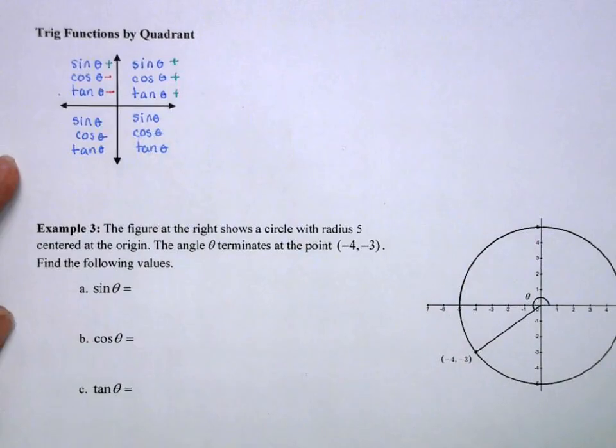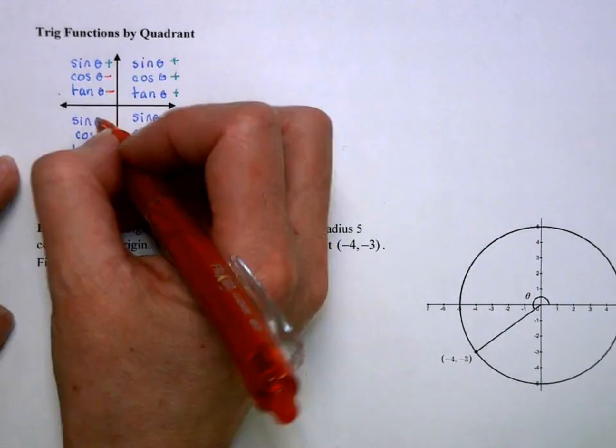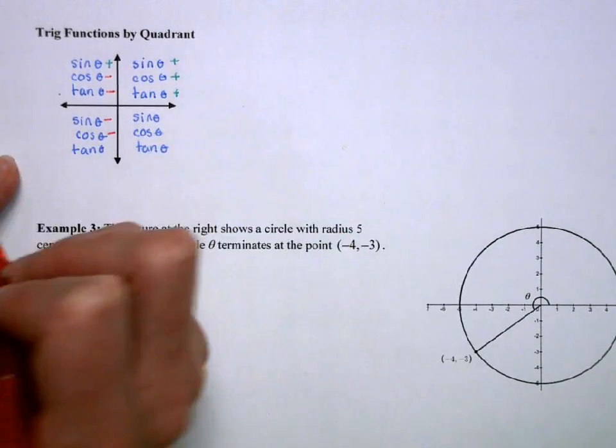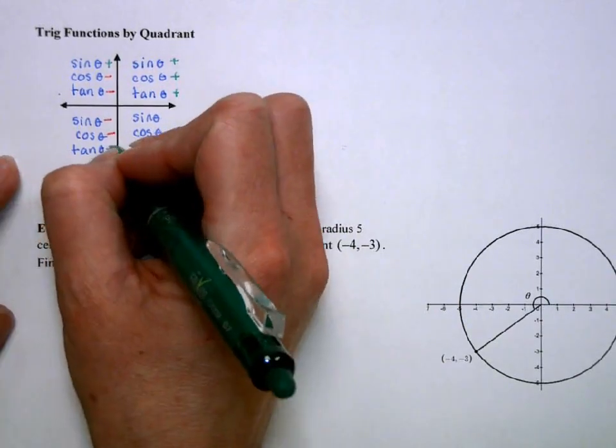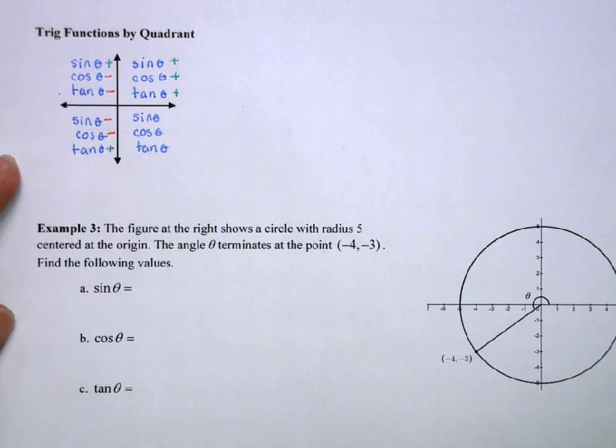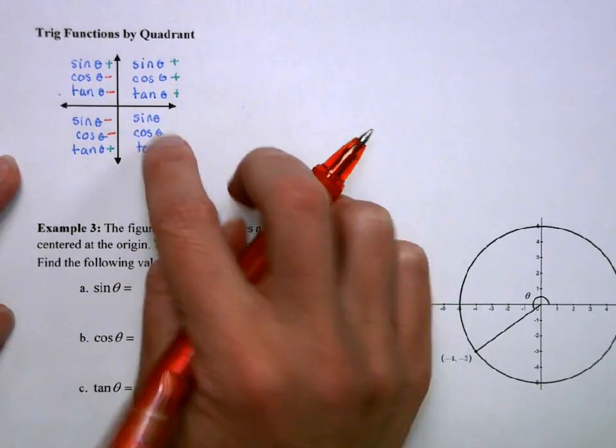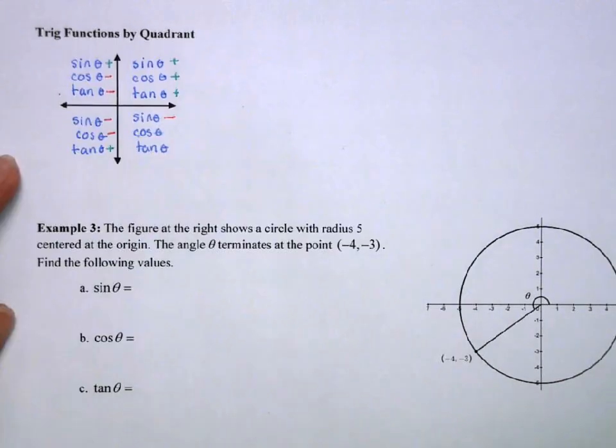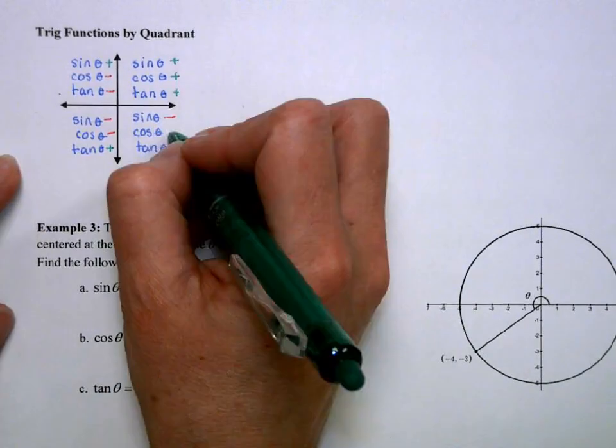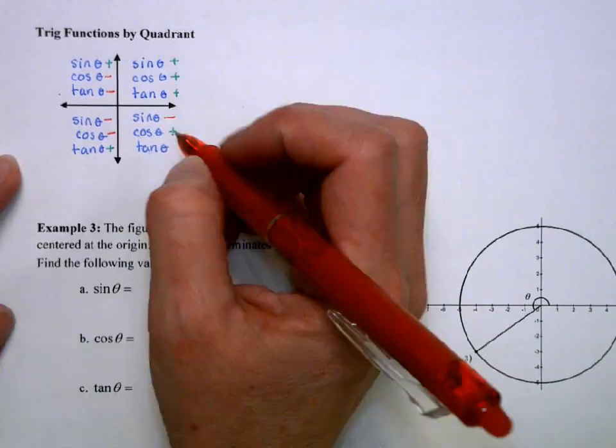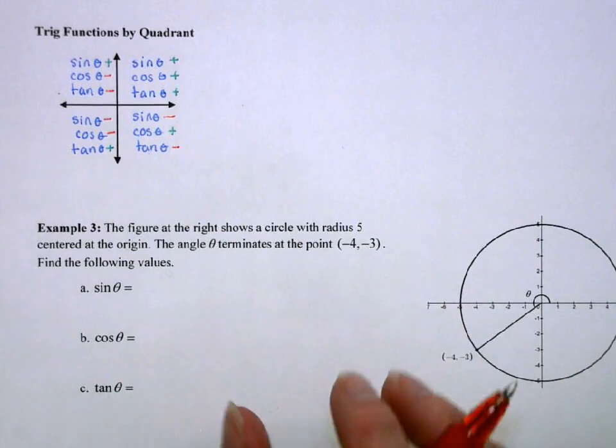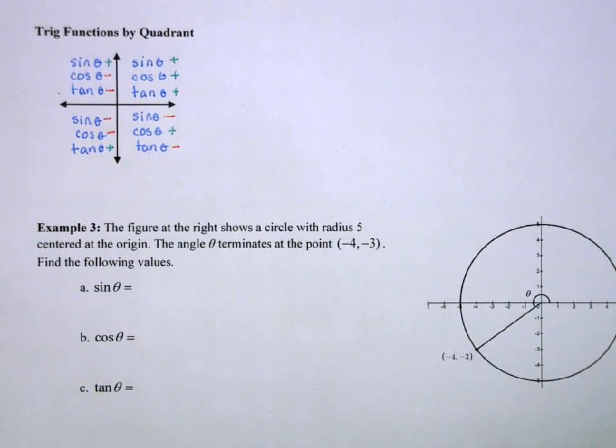In my fourth quadrant, both sine and cosine are negative because both x and y are negative. My tangent, though, will be positive because we're dividing a negative by a negative. In my fourth quadrant, sine is negative because y is negative. Cosine is positive because x is positive. But tangent is negative because it's y over x, so we've got a negative over a positive.